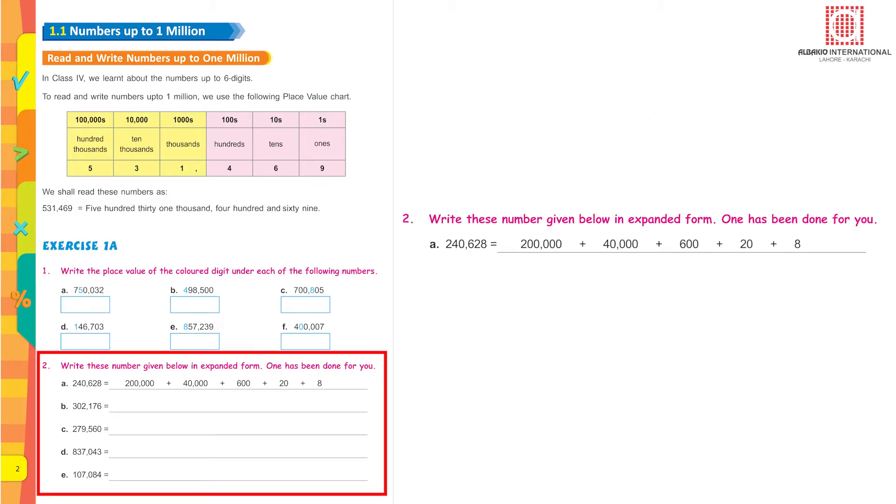Write these numbers given below in expanded form. One has been done for you. The first part is 240,628. For 2 it is 200,000 plus 40,000 plus 600 plus 20 plus 8.